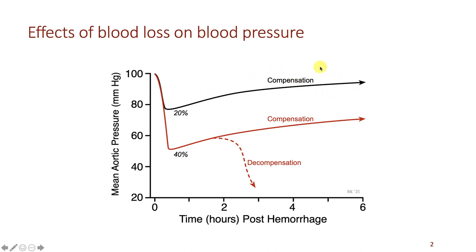This phase of recovery following the loss of blood we call compensation. Now let's compare that with a much larger loss of blood — in this case a 40% loss of blood volume. Once again we see a very rapid decline in pressure, occurring over about a half an hour. The mean aortic pressure is only about 50 millimeters of mercury. Over time, once you stop the bleeding, the blood pressure will gradually recover in some individuals — that would be compensation, as we saw with the smaller blood loss.